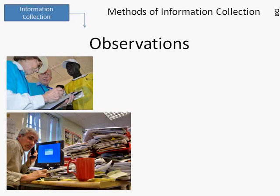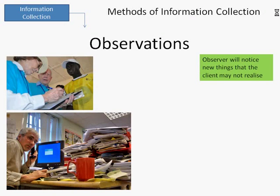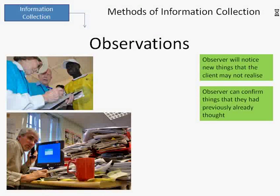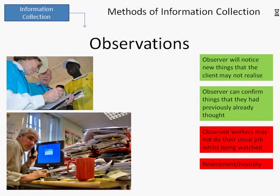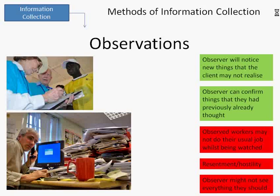Observations are where analysts will watch people working to see how they currently do things. Good things about this is the observer will notice new things that the client may not realize. The observer can confirm things that they had previously already thought. Bad things are the observed workers may not do their usual job whilst being watched. They might be nervous or try and impress too much. They may have resentment or hostility towards the person observing them. People just don't like being watched whilst they are working. And the observer might not see everything they should do. There might be things that the person does only on certain days and the observer might not observe on that particular day.